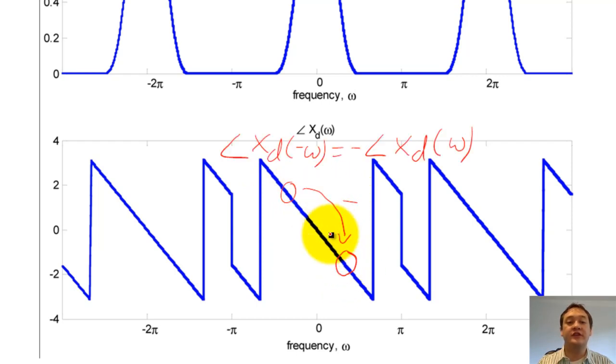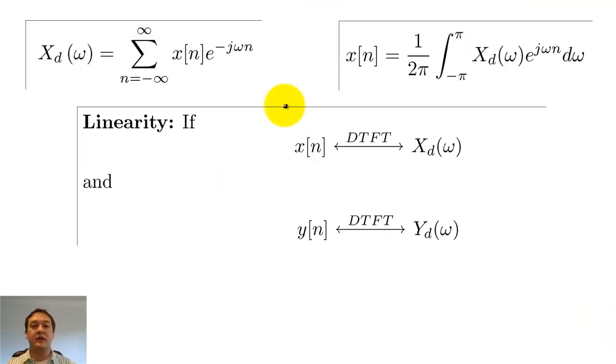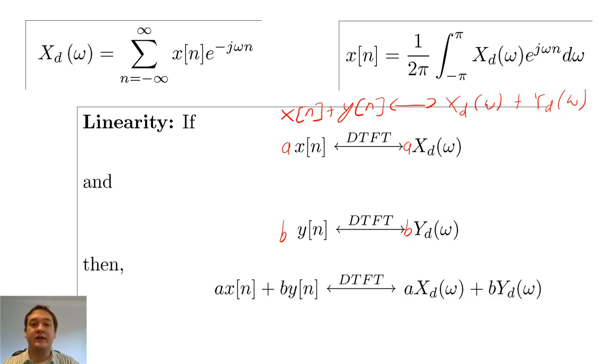For the remainder of the lecture, I will briefly describe some other important properties of the DTFT. The DTFT is a linear function. This means that when you add discrete time signals together, you can obtain their joint DTFT by adding their separate DTFT functions. If you multiply a discrete time signal by a constant, you can obtain the modified signal's DTFT by multiplying its original DTFT by the same constant. These two principles can also be applied together.